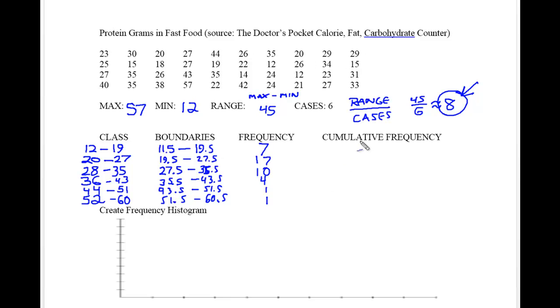We're going to use cumulative frequency for the ogive. We take the number and just add the next number to it. There were 7 fast food items less than or equal to 19.5, 24 items less than or equal to 27.5. If you want less than or equal to 27.5 grams of protein, you're looking at 24 items. Then 34 less than or equal to 35.5, 38 less than or equal to 43.5, 39 less than or equal to 51.5, and finally 40, the total, less than or equal to 60.5 grams of protein.